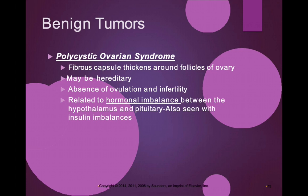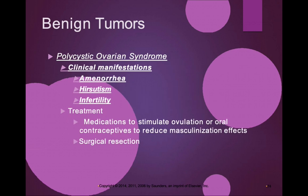When we see signs of polycystic ovarian syndrome, we commonly check blood sugar and insulin levels. Glucose levels and hemoglobin A1C levels may be a little bit higher. The manifestations of PCOS include amenorrhea — no menstrual cycle.